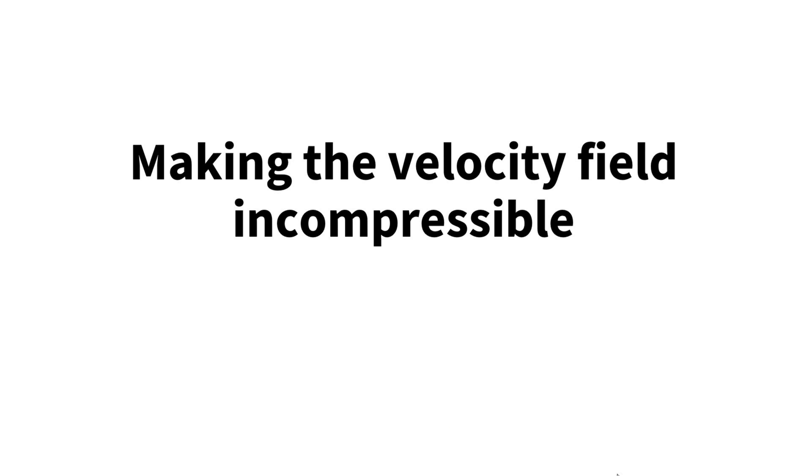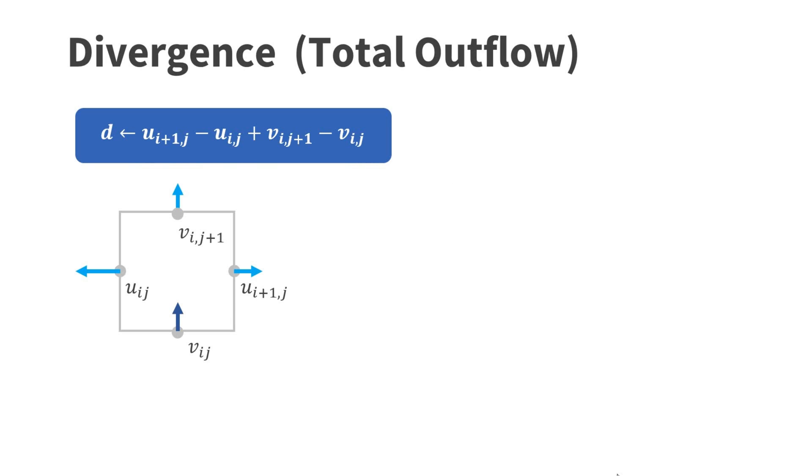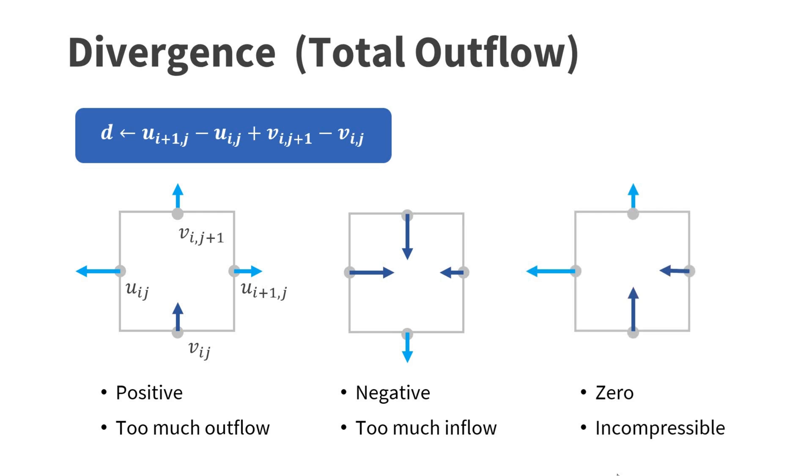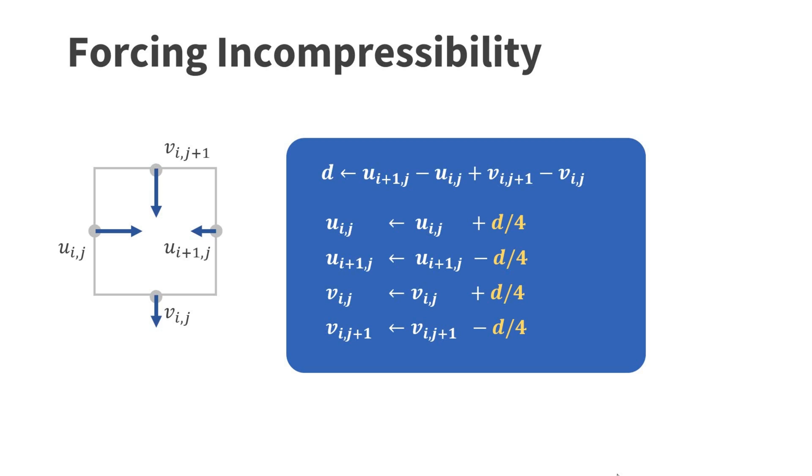Once the velocities are transferred from the particles to the grid, we want to make the velocity field on the grid incompressible. This step is called projection and is identical to the projection step of the Eulerian simulation method. To make this tutorial self-contained, I briefly explain it again. For a given cell, we first compute the divergence, which is the total outflow. If U on the right is positive, fluid flows out of the cell, so we use a positive sign. On the other hand, if U on the left is positive, fluid flows into the cell, so we use a negative sign. If D is positive, we have too much outflow. If D is negative, we have too much inflow. Only if D is zero, we have an incompressible fluid. To make the divergence zero, we need to modify all the velocities by the same amount. Here, one-fourth of the divergence.